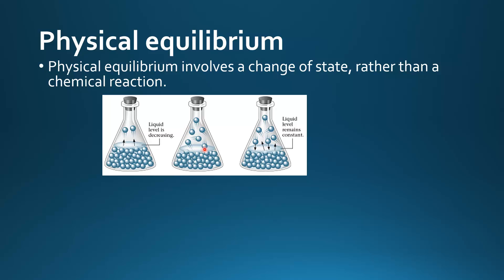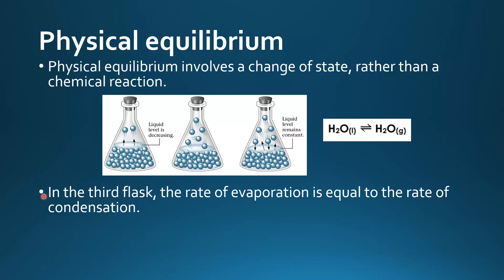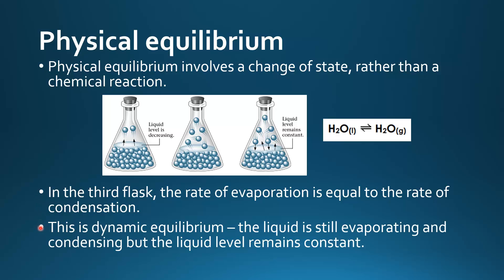In the middle flask there is an increased rate of evaporation and some particles start to condense — that is, they change from a gas back to a liquid. In the third flask the liquid level remains constant because the rate of evaporation is equal to the rate of condensation. This is dynamic equilibrium: the liquid is still evaporating and condensing but at the same rate.